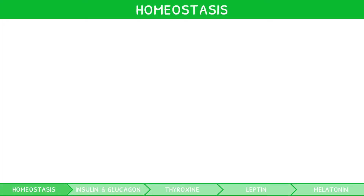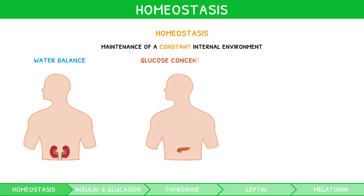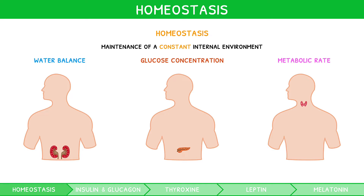Homeostasis is a term you should be familiar with from our IB Biology Topic 1 video series, but as a reminder, it is the maintenance of a constant internal environment. It can relate to several properties, for example water balance, glucose concentration or metabolic rate. For your exam, you need to know how several key hormones enact their respective homeostatic mechanisms.